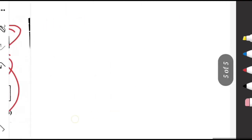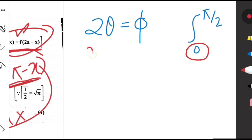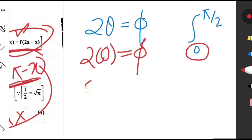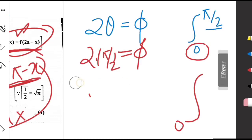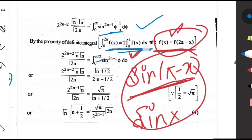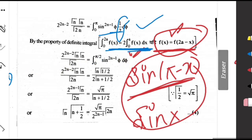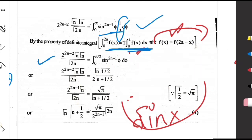After the substitution φ = 2θ with limits 0 to π, and applying the property to reduce limits to 0 to π/2, the factor of 2 introduced cancels with the 1/2 from dθ, so we do not write an extra 2 in the next step. The result becomes 2^(2n-2)·Γ(n)·Γ(n)/Γ(2n) on the right-hand side.